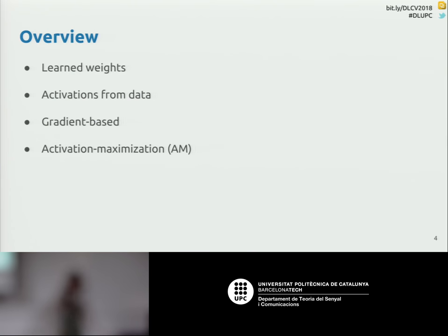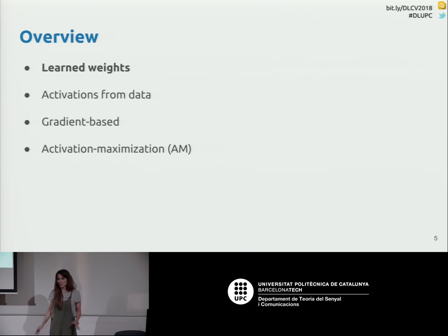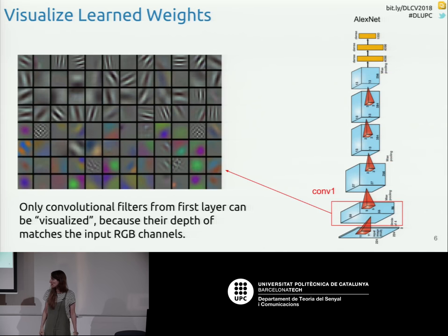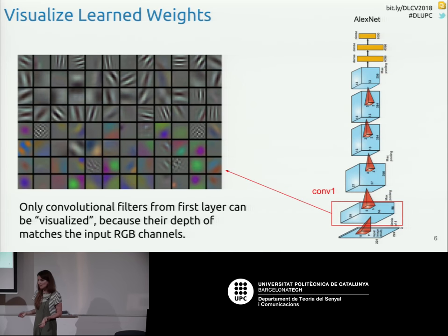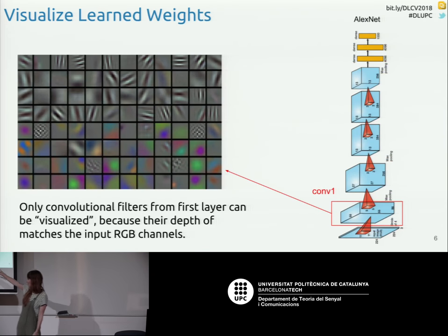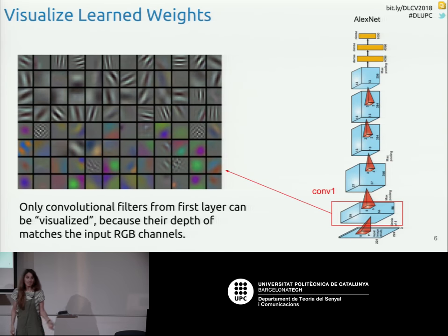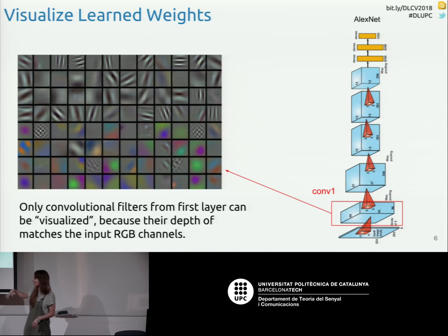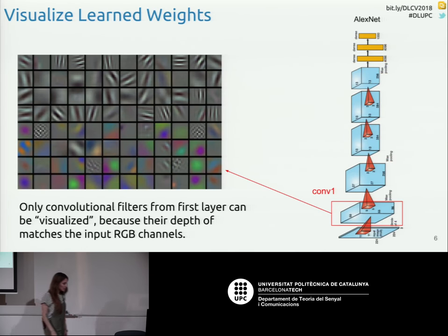Starting with the first and most simple thing: we can try to visualize the weights once we train the model. In this case the architecture is AlexNet, trained for ImageNet classification. You can go to one of the layers — in particular the first one — and since the kernels are like little images, you can just plot and visualize what they look like. They kind of make sense: in the first layer they look for very low-level features — different textures, edges, changes in colors — similar to the Gabor filters that were traditionally engineered.